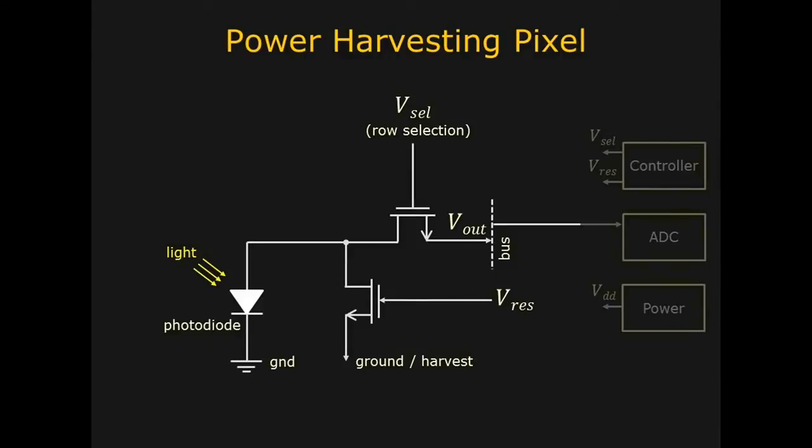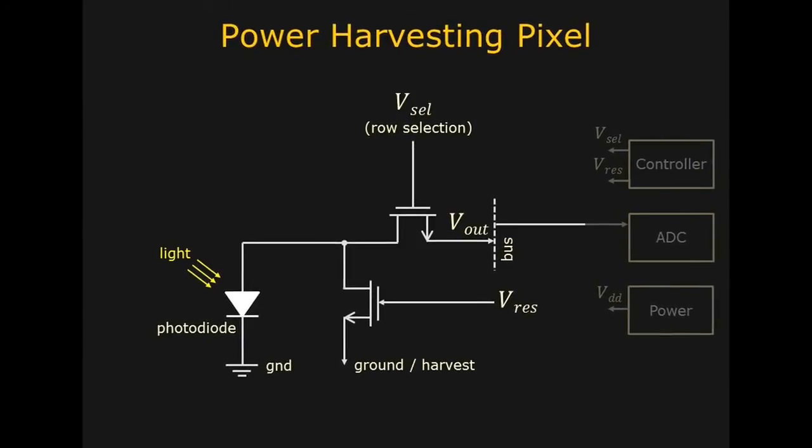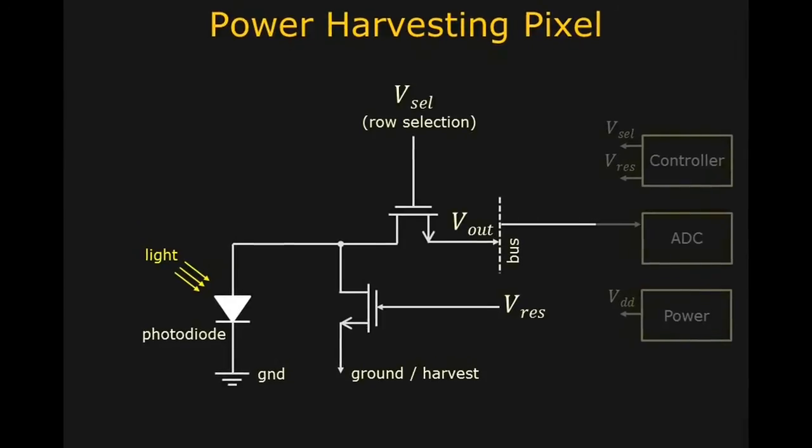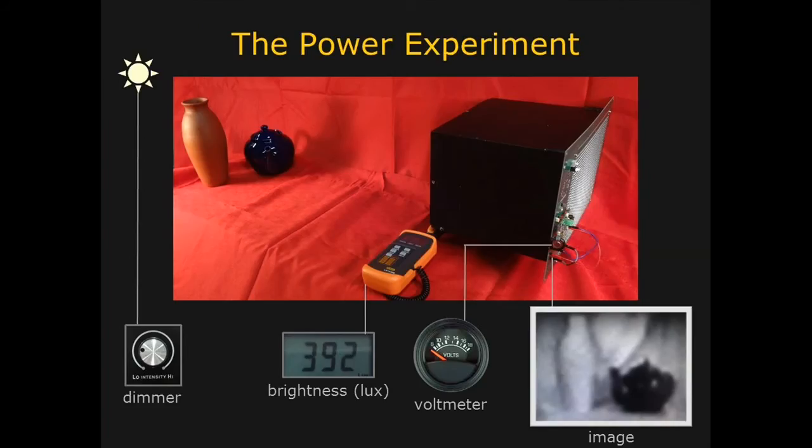The new pixel design is very simple, and it uses just two transistors and one photodiode. During each image capture cycle, the pixels are used first to record and read out the image, and then to harvest energy and charge the sensor's power supply.